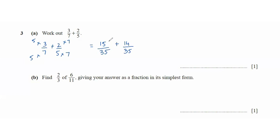Now 15 plus 14 is 29, so 29 over 35 is our answer to this sum of fractions.